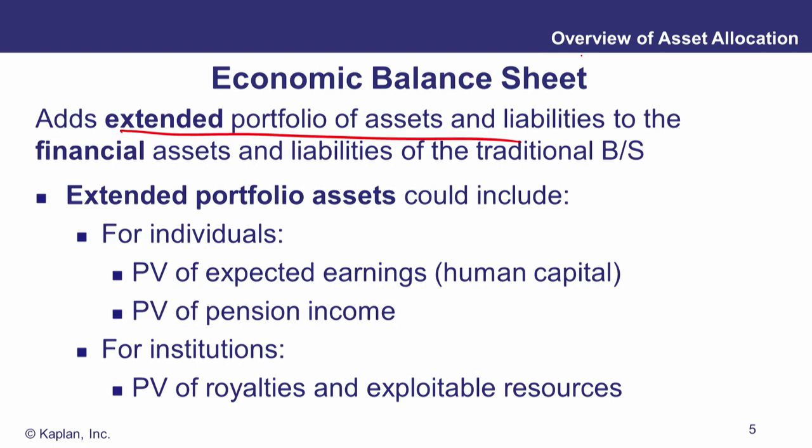Extended assets wouldn't normally appear on a balance sheet for an individual or a company because they haven't happened yet. For example, the present value of expected earnings. Speaking personally, I've hopefully got a couple of decades to go before I retire, and if I discount those future earnings down to present value, that's effectively an asset. That would be known as human capital — the present value of your expected future income.